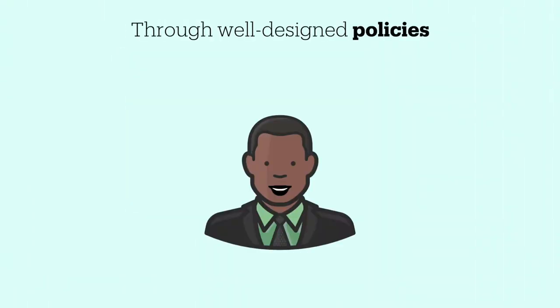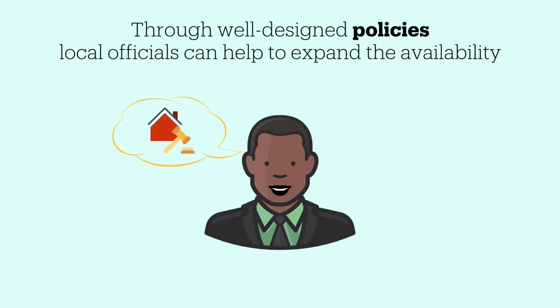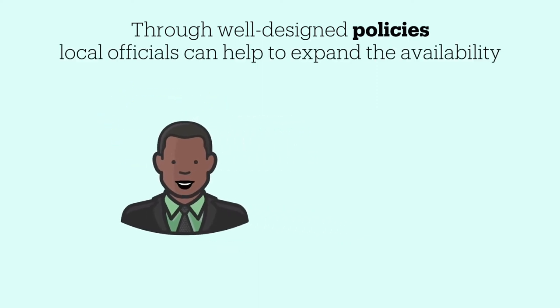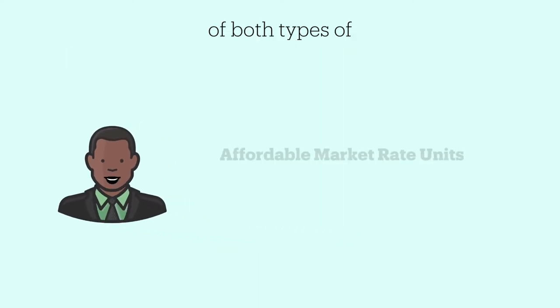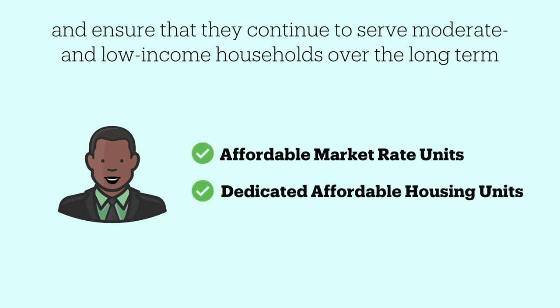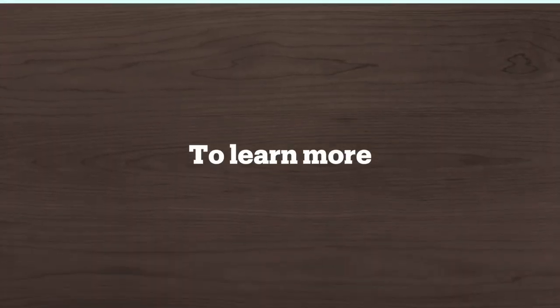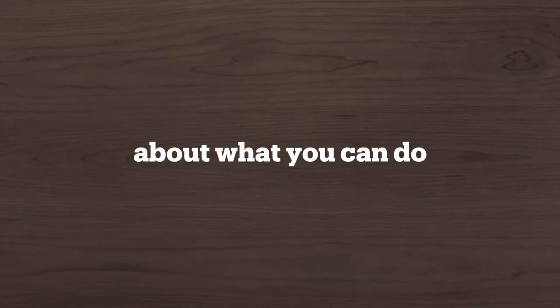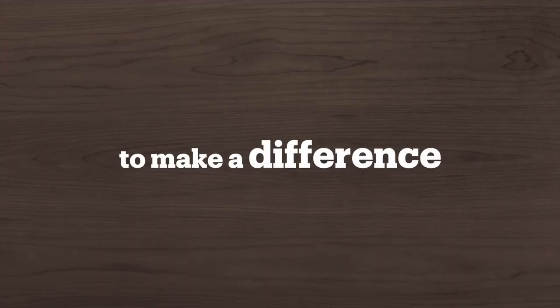Through well-designed policies, local officials can help to expand the availability of both types of affordable housing and ensure that they continue to serve moderate and low-income households over the long term. To learn more about what you can do to make a difference, visit localhousingsolutions.org.